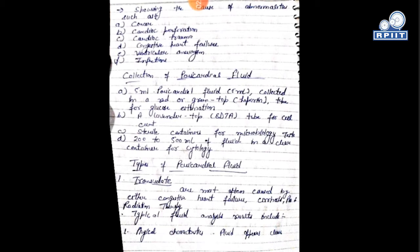For collection of pericardial fluid: 5 ml is collected in red and green top tubes. A lavender-type EDTA tube is used for cell count. 200 to 500 ml of fluid is placed in a clear container for cytology.